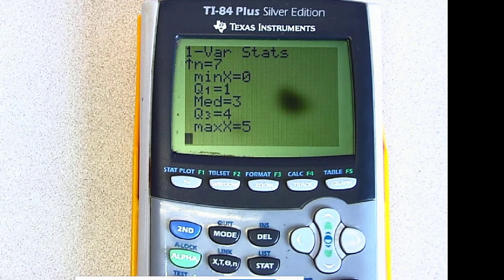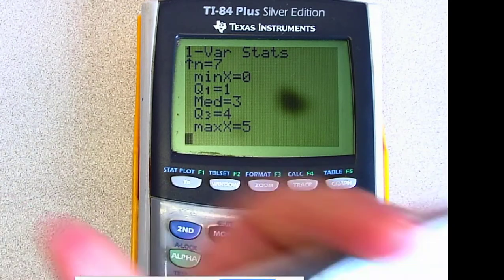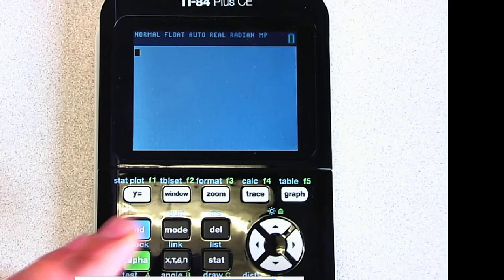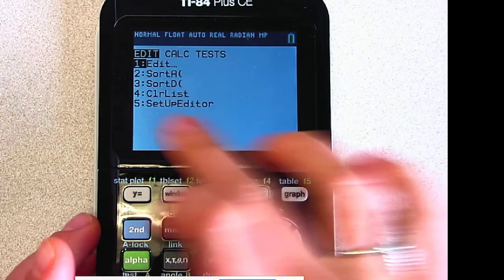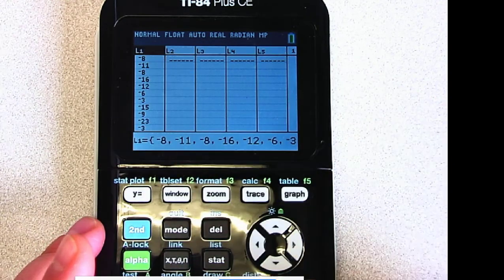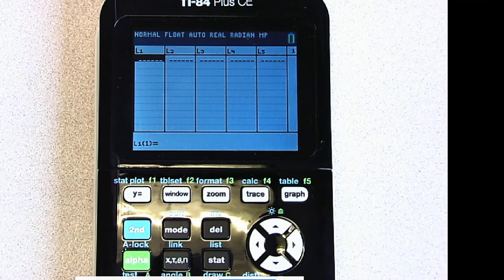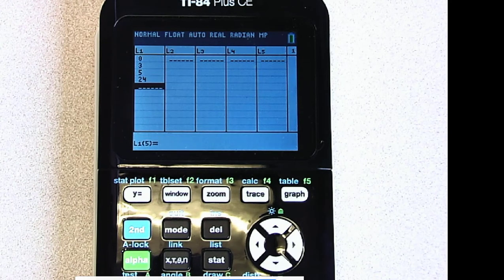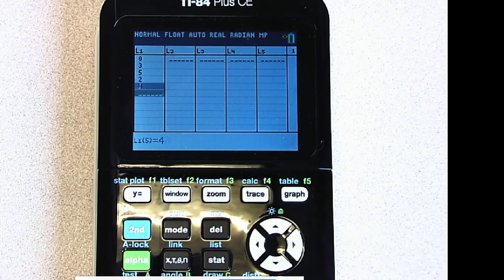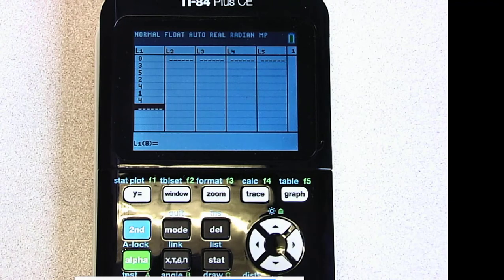Just really quickly, I'm going to pull out the newer calculator in case you have a different calculator. Here's the newer one. If I go to STAT, you see the same options: Edit. I've got info in my List 1 again. Clear, and then I'm going to enter my data: 3, 5, 2, 4, 1, 2, 4, 1, 4.